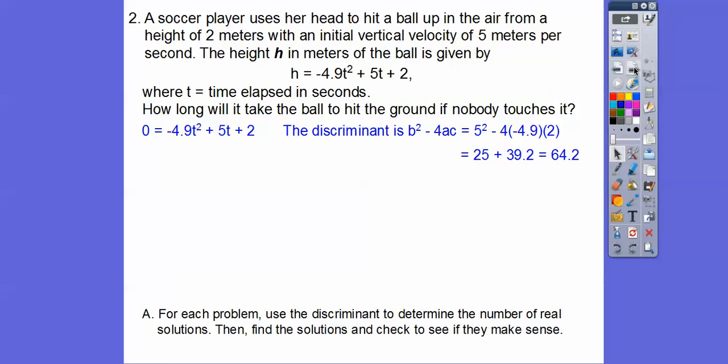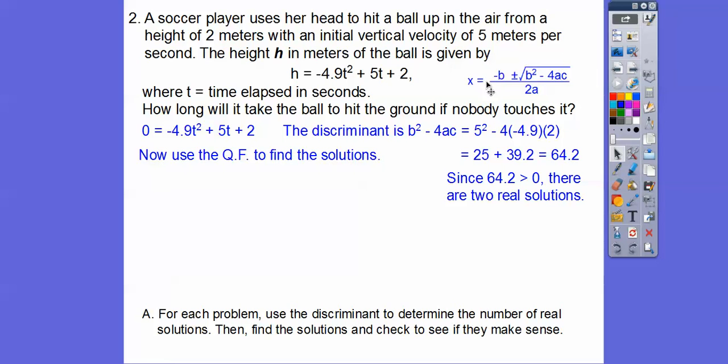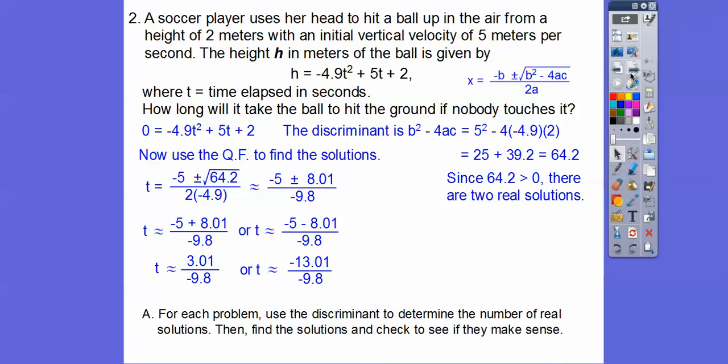So there's the discriminant. So we get 64.2. So that's greater than 0. So we know that there's going to be two real solutions. And if we get a negative one, then we can disregard it. So now let's use the good old quadratic formula right there to find the solutions. So we plug everything in. And we don't have to do the b squared minus 4ac because we already did it up here when we did the discriminant. So you're going to have to do it sooner or later. So here we go. So the square root of 64.2 is around 8, so it's about 8.01. So negative 5 plus 8.01 over negative 9.8 and negative 5 minus 8.01 over negative 9.8. So keep going. Negative 5 plus 8.01 is 3.01. And then here we have a positive divided by a negative. We're going to get a negative on this answer. Here we have a negative divided by a negative. We're going to get a positive on that answer right there.